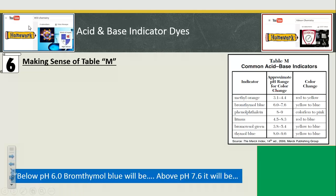Below pH 6, bromothymol blue will be yellow, it says. And above 7.6, it will be blue. And if it was right in the middle, mixed yellow and blue, you've got green.